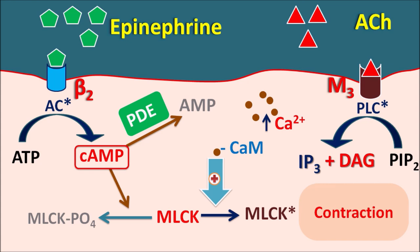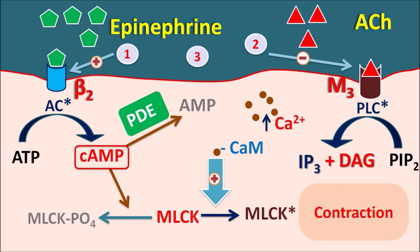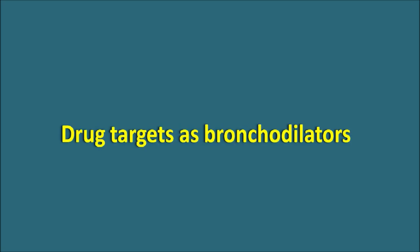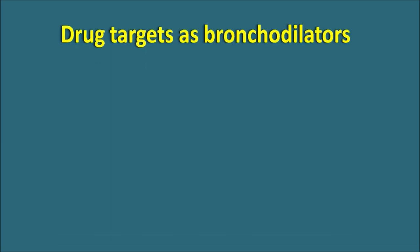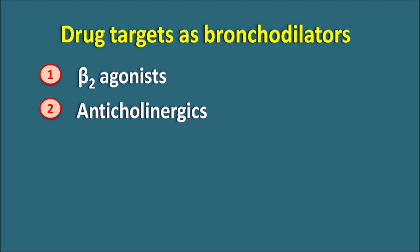These are the various ways by which bronchial smooth muscle is contracted or relaxed. Now let us see which drug targets are possible at the bronchial smooth muscle to produce bronchodilation. The first drug target is to activate the beta-2 receptor to produce bronchodilation. The second is to block M3 receptors — so anticholinergics are the second type. Third, we can inhibit the phosphodiesterase enzyme, thereby increasing cyclic AMP levels. So we have three types: beta-2 agonists, anticholinergics, and PDE inhibitors.